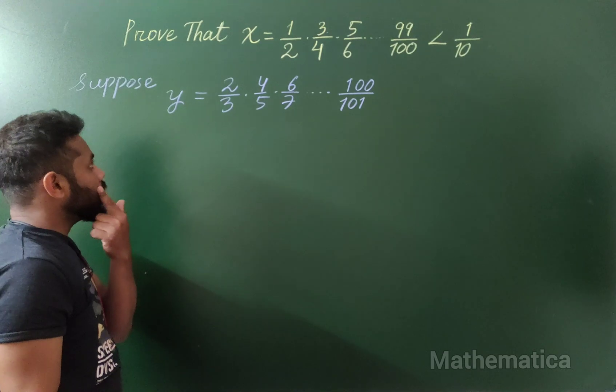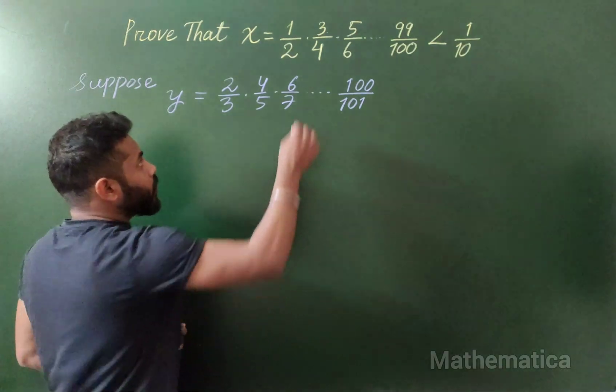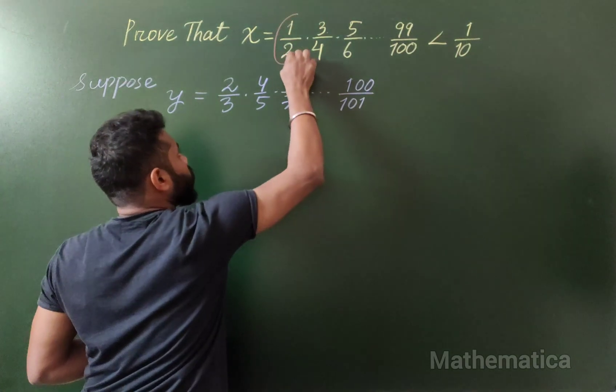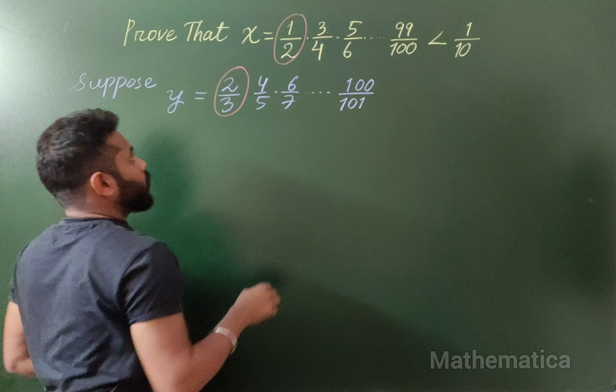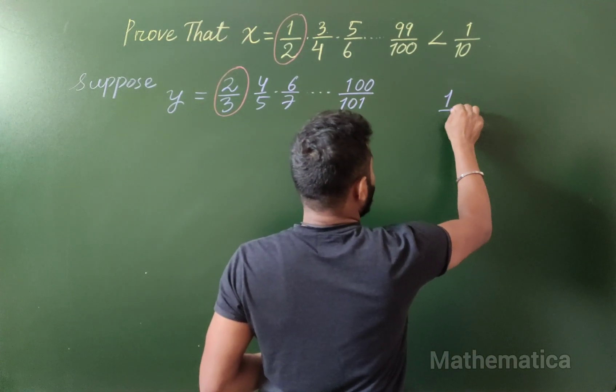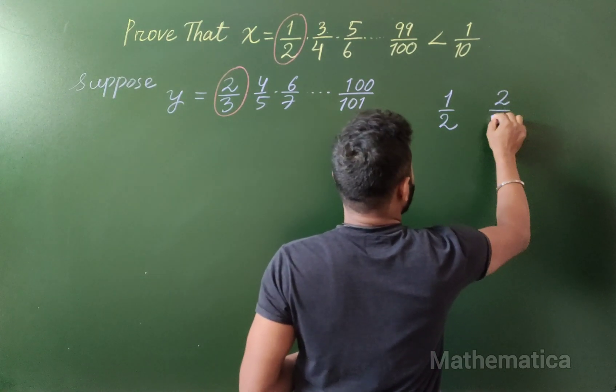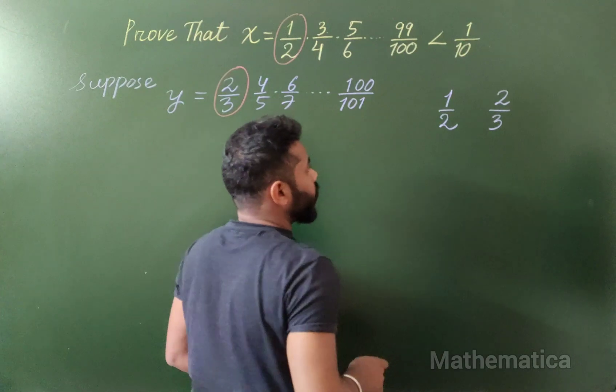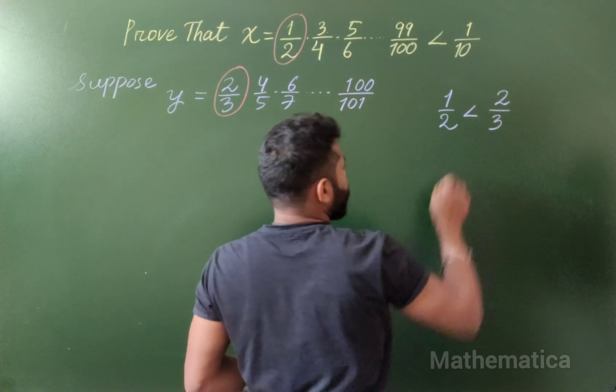If you notice here, let's now compare each quantity. If you see 1/2 and 2/3, this is 0.5 and this is 0.6, so this one is less than.